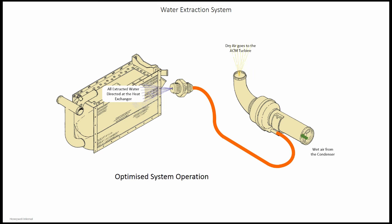The water extraction system uses system pressure to force free water collected in the sump of the water extractor through a small diameter hose into the spray nozzle. The spray nozzle directs the extracted water onto the cooling side of the secondary heat exchanger, where the water evaporates in the ram air, improving the cooling efficiency of the secondary heat exchanger and the ECS system.